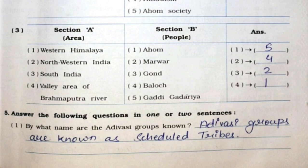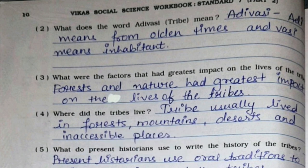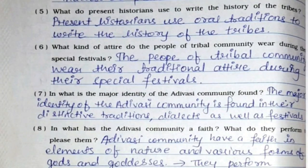First: By what name are the Adivasi groups known? Adivasi groups are known as Scheduled Tribes. Second: What does the word 'Adivasi' mean? 'Adi' means from olden times and 'wasi' means inhabitant. Third: What were the factors that had the greatest impact on the lives of the tribes? Forests and nature had the greatest impact on the lives of the tribes. Fourth: Where did the tribes live? Tribes usually lived in forests, mountains, deserts and inaccessible places.